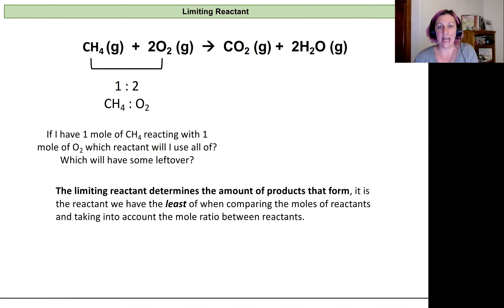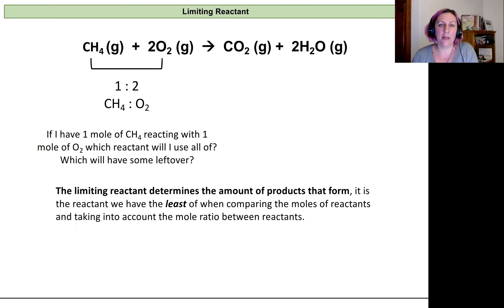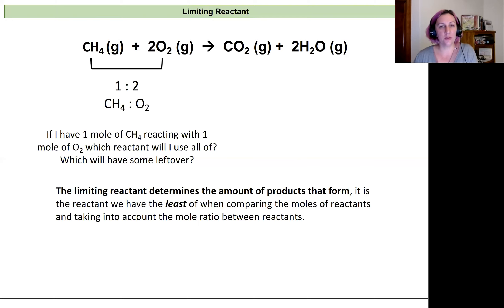In this lecture video we're going to talk about limiting reactants. A common analogy is hot dogs and buns: if you have 10 hot dogs but only 8 buns, the most complete hot dogs in buns you can make is 8. You're limited by the buns — the ingredient you have least of. That's really what a limiting reactant is: determining which reactant you have the least of, in terms of the ratio needed, that prevents you from making more product.